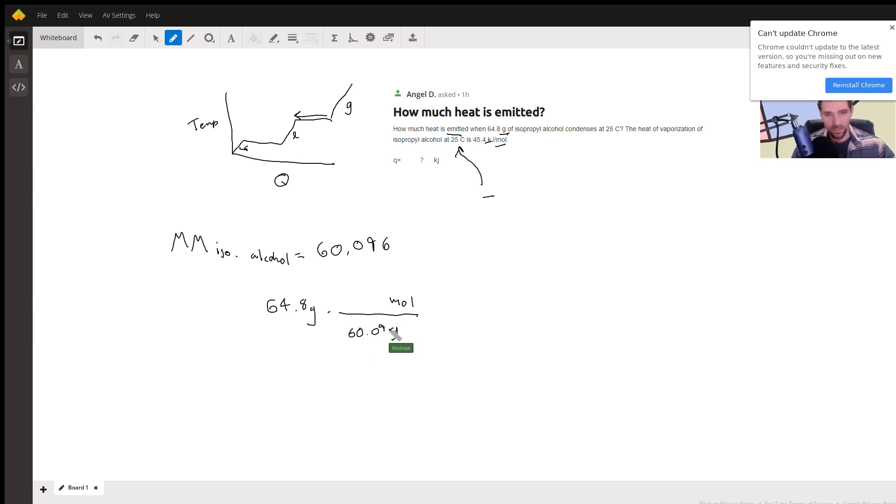And that's our molar mass right there. That's how much one mole weighs. So one mole is equal to that weight, and that would give you this amount in moles. So let's get the calculator out. We've got 64.8 divided by 60.096, and looks like we've got 1.078 moles of the substance. And we can round that, but we're not going to round until we get to the final answer.